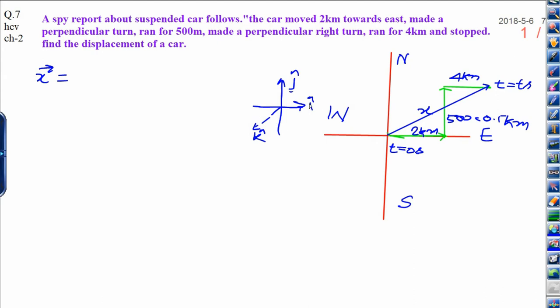First of all, you see the diagram. Car moved 2 km to east. It means east means here I, 2i. That is, I can write here 2i. Plus, 0.5 km towards y axis. It means 0.5 into J unit vector. Plus, 4 km towards this again. That means along x axis. That is why I can write 4i.